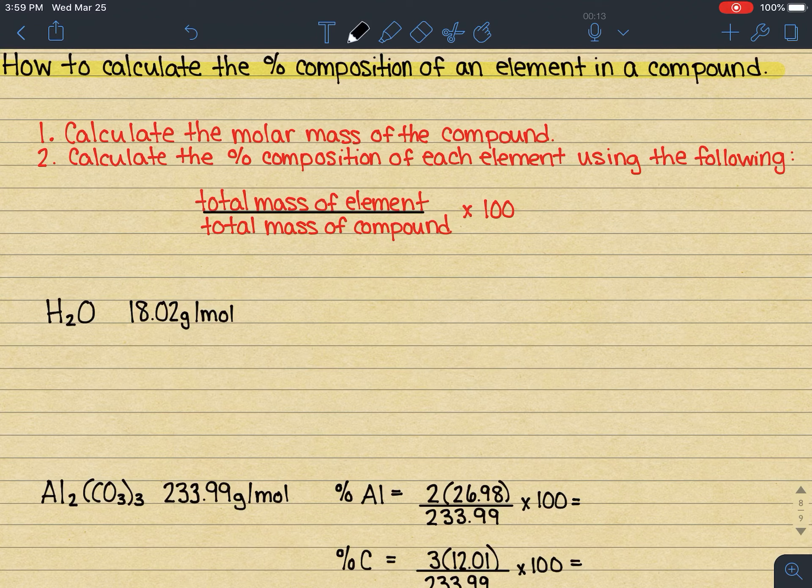All right, calculating the percent composition of an element in a compound is a pretty straightforward skill if you have calculated the percent of anything in your lifetime or throughout school. So for this, the very first skill you need to have is that ability to calculate the molar mass of a compound. If you don't currently know how to do that, that is something you're going to need to go back and work on prior to attempting this next level.